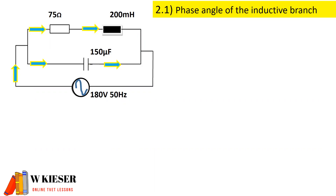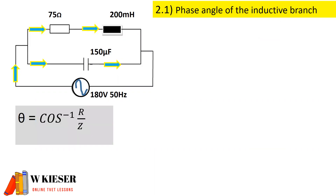In the first part of this question we need to determine the phase angle of the inductive branch. It's very important to note we are referring to the inductive branch. The phase angle is determined using cos to the minus 1 of R over the impedance.